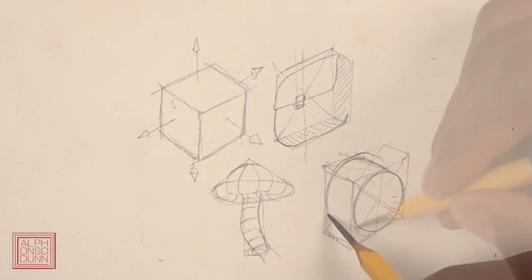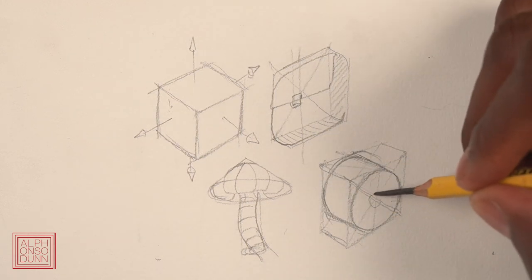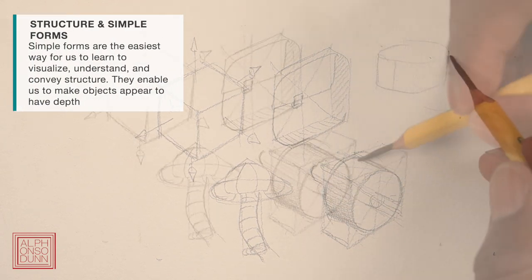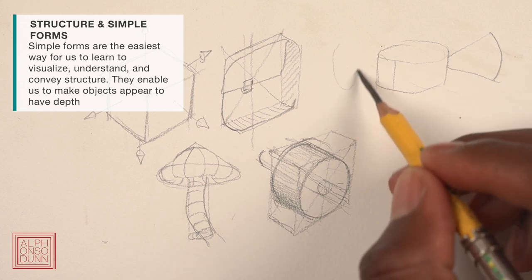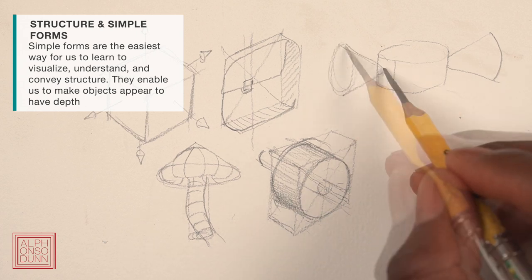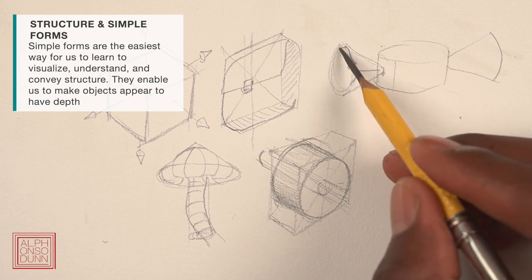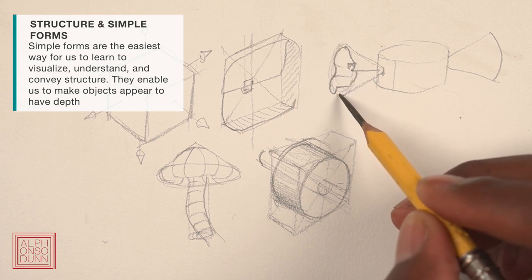So it's mainly what we address when we simplify objects or reduce them to simple forms. And this is why mastering simple forms is such an important part of learning drawing. Simple forms are the best examples of structure in its simplest and purest form.